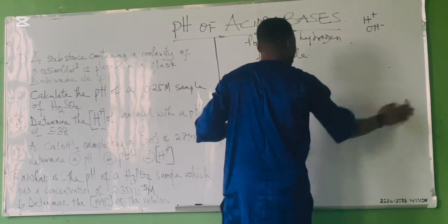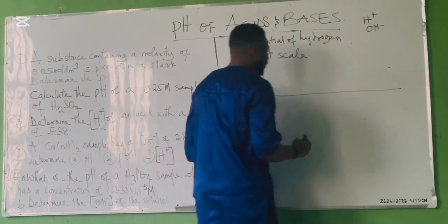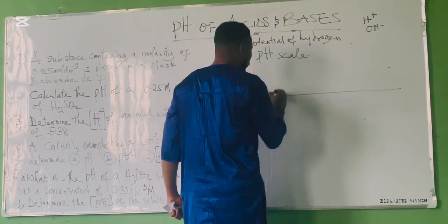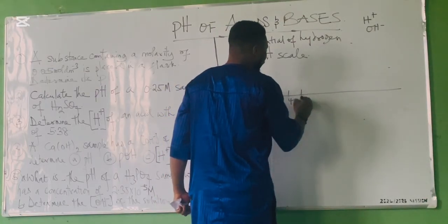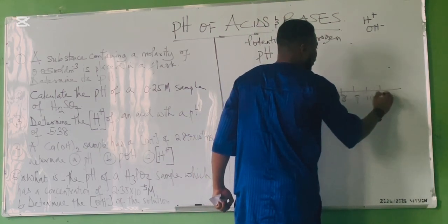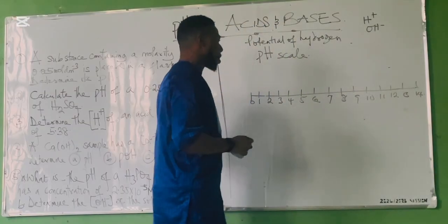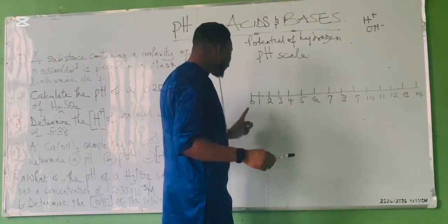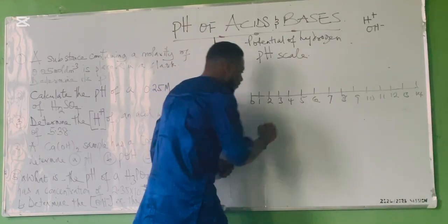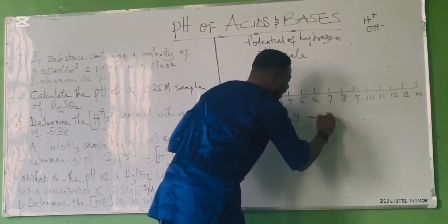The pH scale goes from 0 to 14. Now, from 0 to 6.9 is acidic. Any substance that has a pH between 0 and 6.9 is an acid. pH 7 is neutral, while from 7.1 to 14 is basic (alkaline).